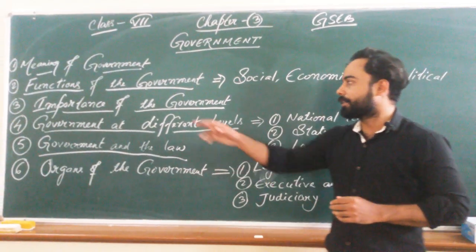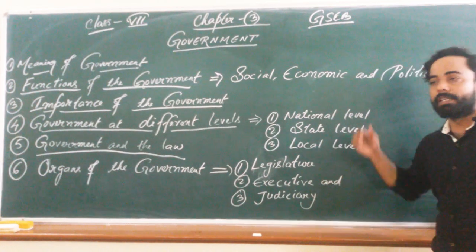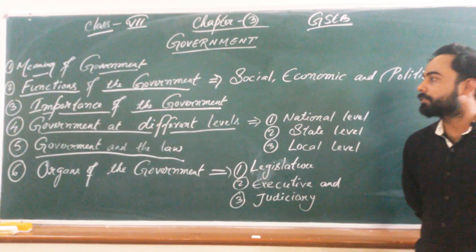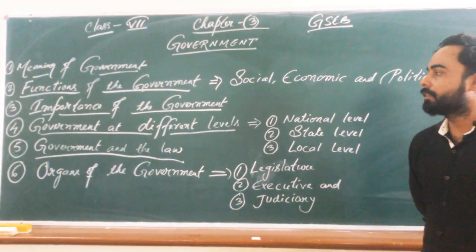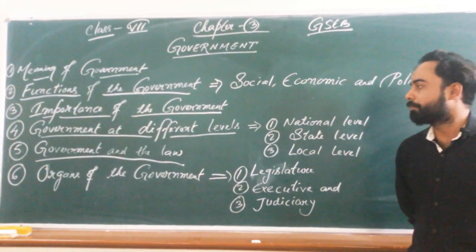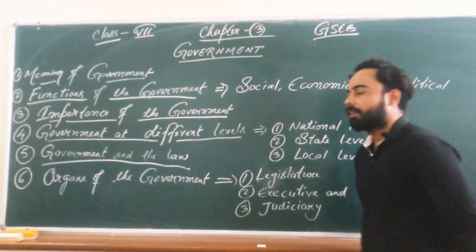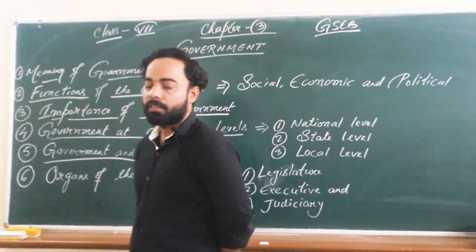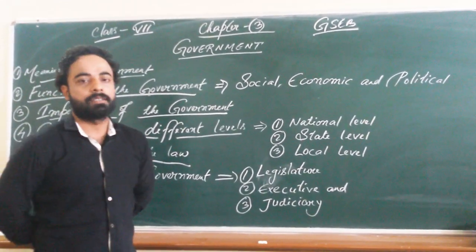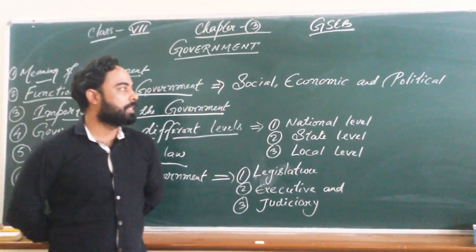Let us study the functions of the government, which include social, economic, and political functions. The government in a democratic country basically functions as per the hopes and aspirations of the people. It takes several steps for the economic and social development of the nation. It also solves many social and economic problems like poverty, unemployment, illiteracy, healthcare, and medical facilities.